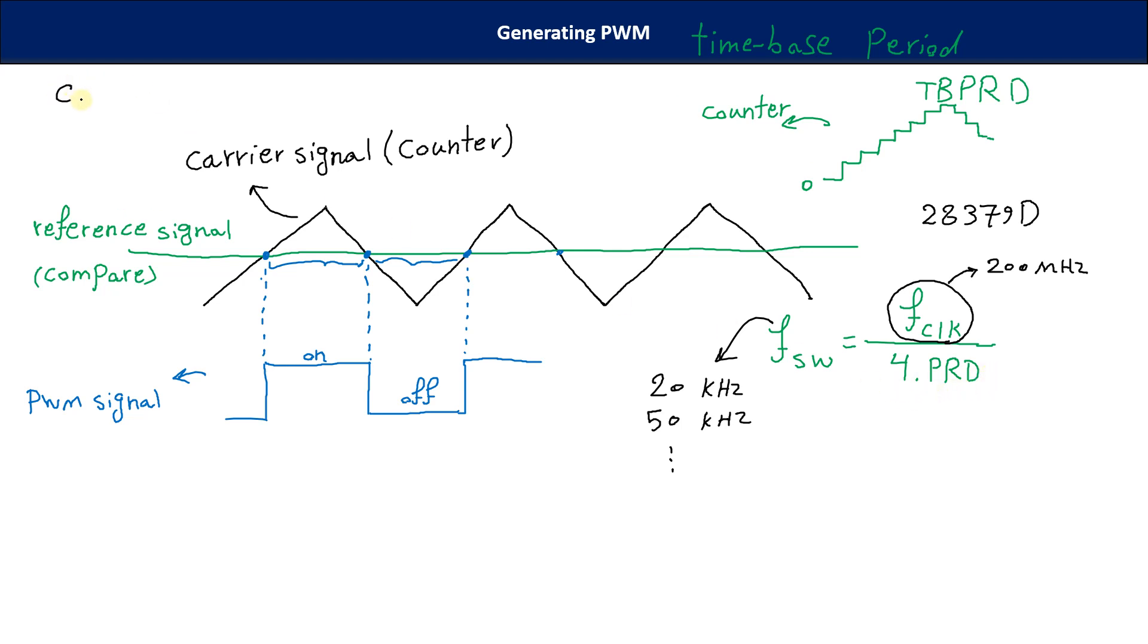So, in Code Composer, Code Composer Studio, we have to determine the value of PRD. So, let me to change this formula to this one. PRD equals to the clock frequency divided by 4 the switching frequency.